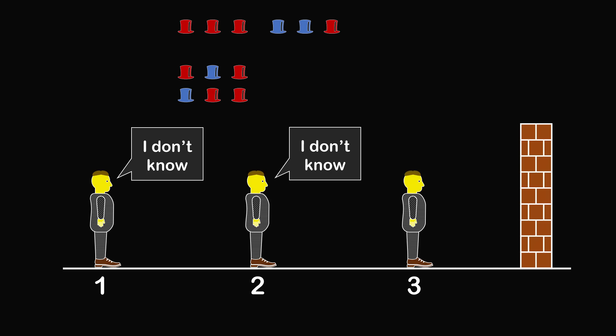So this finally brings us to prisoner 3. Prisoner 3 has heard, I don't know, I don't know, and knows there are only 4 possible cases remaining. Now in each of these cases, there must be a red hat on the third prisoner. So prisoner 3 will reply, I know, and my hat color is red.